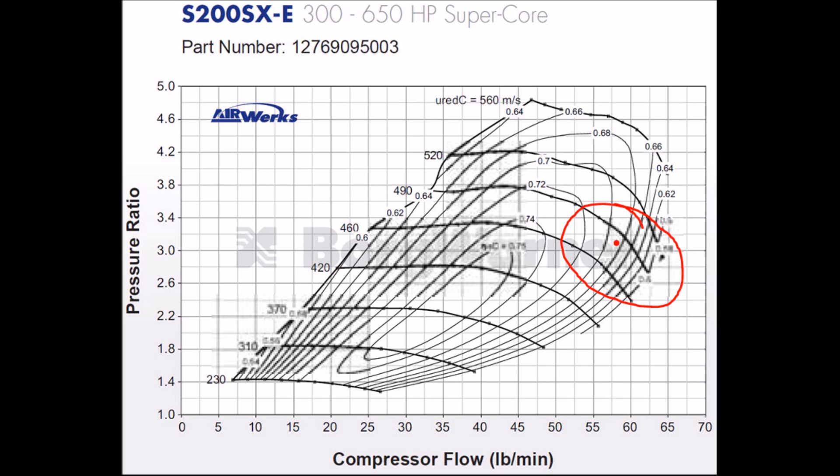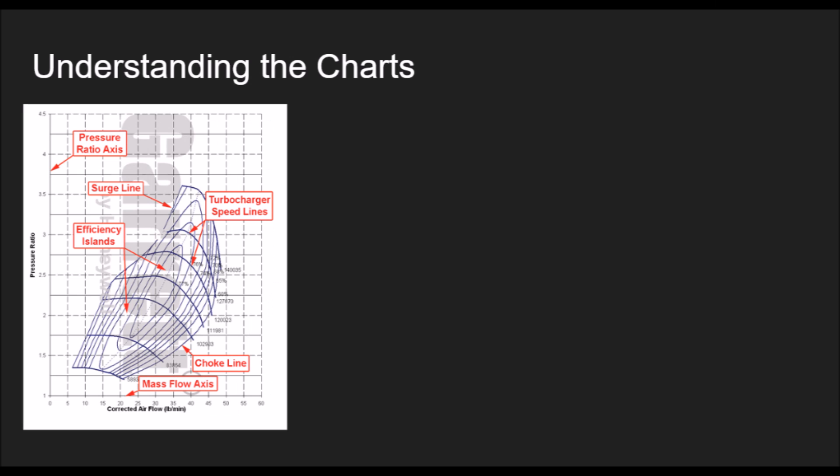This is just to kind of summarize this chart for you guys. As you can see here, I'm pointed to the choke line. This is the line where your turbo will not really work. This is its maxed out point, so you do not want to go past that point. Turbo speed lines - this is your best. The higher you get, the more efficient your turbo is.